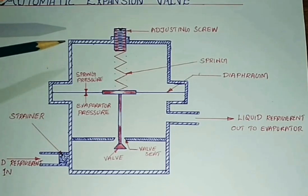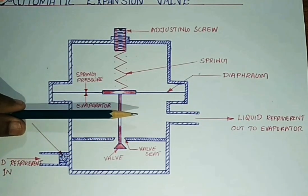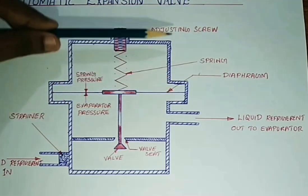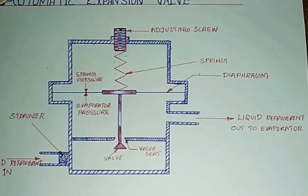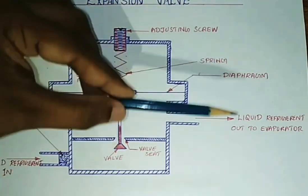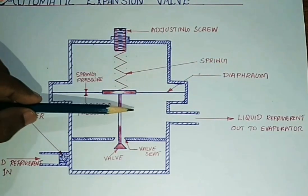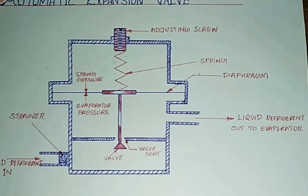When we turn off the compressor, we load the liquid refrigerant into the evaporator. When the pressure drops, the diaphragm will open the valve and open the seat. When we load the compressor again, the valve will close as pressure builds up, and the diaphragm will keep it in balance.